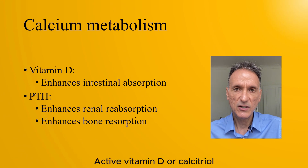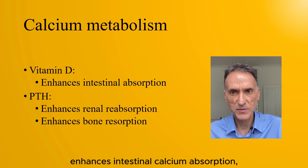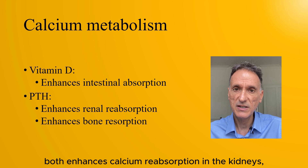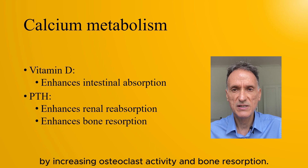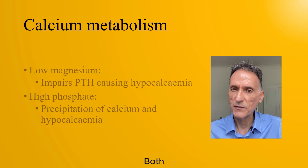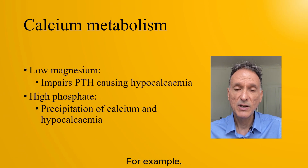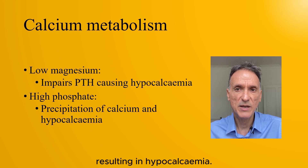Active vitamin D, or calcitriol, enhances intestinal calcium absorption. PTH both enhances calcium reabsorption in the kidneys and releases calcium from the bones by increasing osteoclast activity and bone resorption. Both phosphate and magnesium can affect calcium levels. For example, a low magnesium can impair PTH secretion and action, resulting in hypercalcemia.